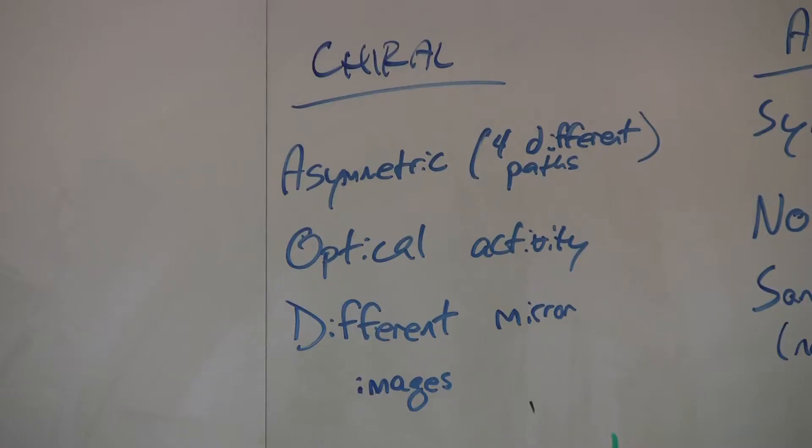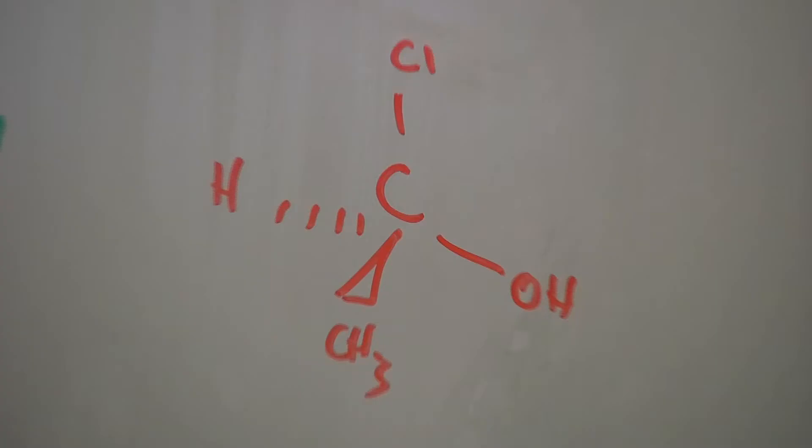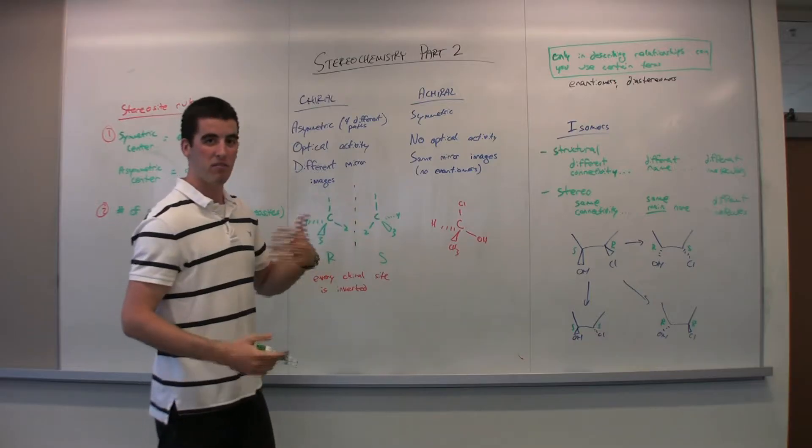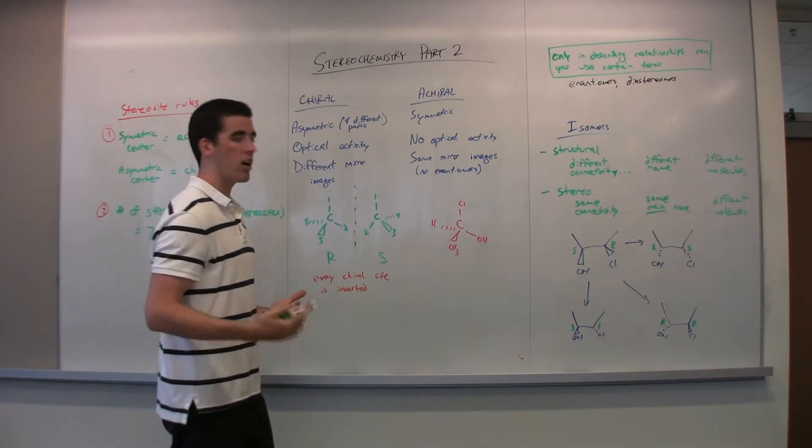With chiral sites, you're looking at an asymmetric carbon. So four different paths, something like this. Every atom or path from that carbon is different. And so we can prioritize and rank them and then find the stereochemical designation, R or S.